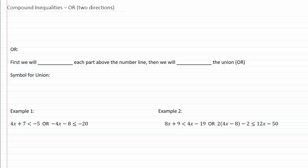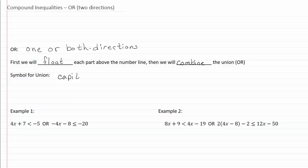Compound inequalities go in two directions. When we have compound inequalities with an 'or,' we're going to be going either one or both directions — meaning going left and right. First, we're going to plot each part of the graph above the number line, and then we will combine the union, which is another word for 'or.' The symbol for union is a capital U. So let's take a look at example one.